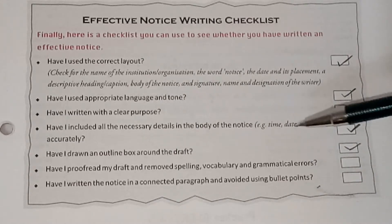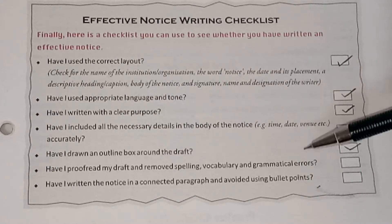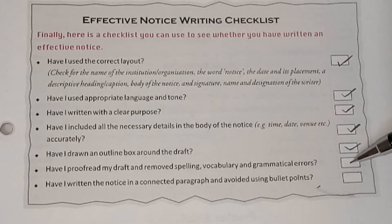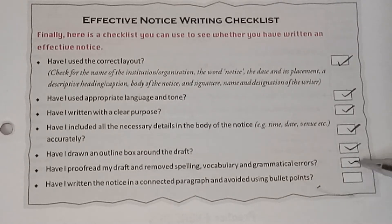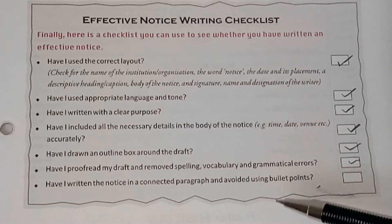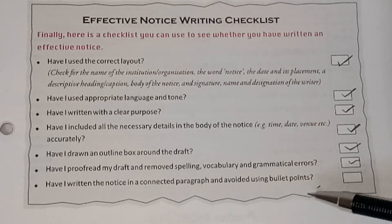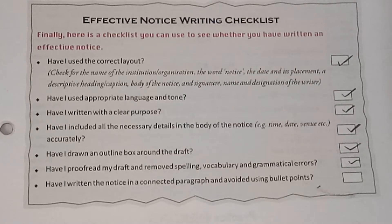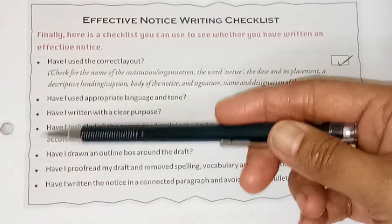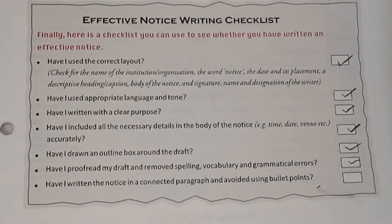Then, have I proofread my draft and removed spelling, vocabulary, and grammatical errors? You have to check all these things after writing. If done, put a tick. Have I written the notice in a connected paragraph and avoided using bullet points? See — in notice writing, you do not use bullet points. No number one, two, three — nothing like that inside it. No A, B, C — nothing like that is used in a notice.